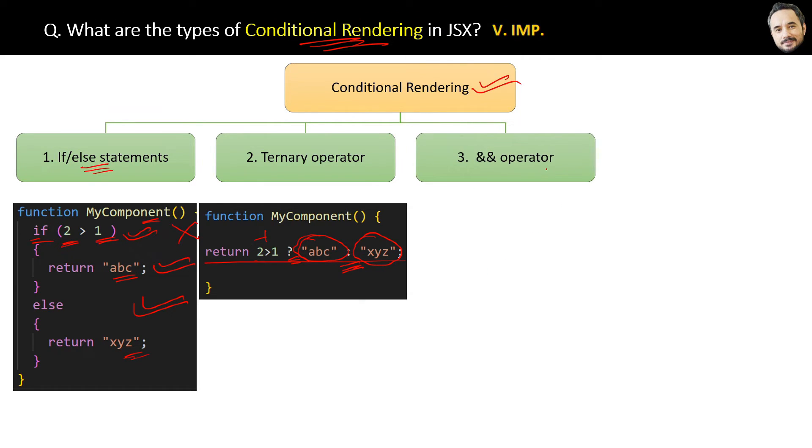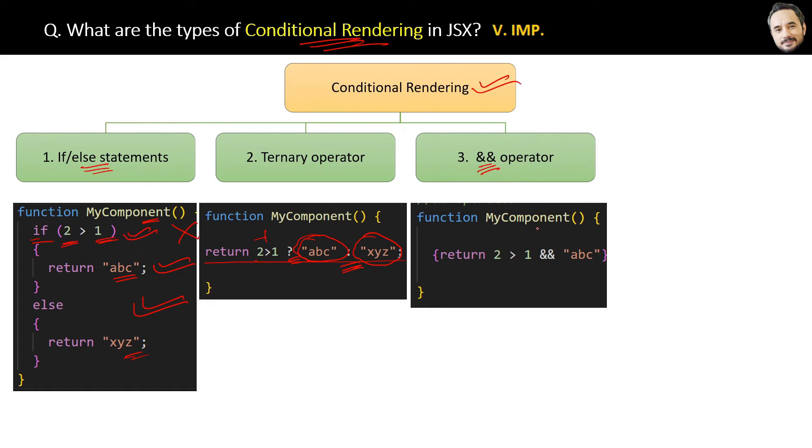The next way of conditional rendering is the && operator. Here in the code it is almost similar to ternary only, but here the && operator returns only truthy values and will never evaluate a false condition. Meaning if the first condition is true, it will return the statement after the && operator, exactly like the ternary operator.